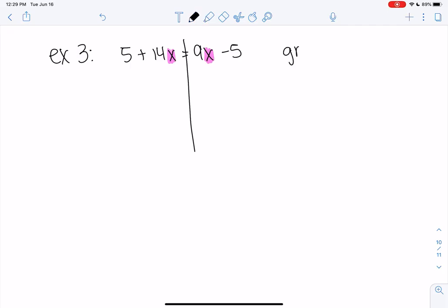So we want to group the X's onto one side. It doesn't matter which side, I tend to choose the left side just because there's really no reason for that though. You could choose the right side. So to do that I need to move the 9x.